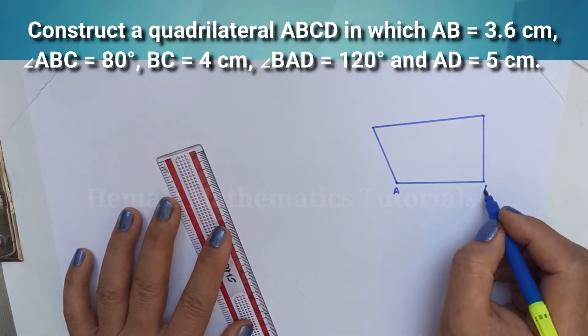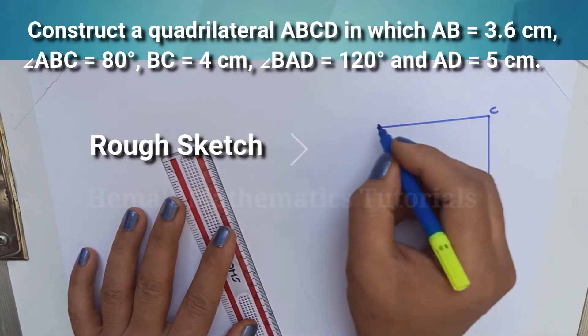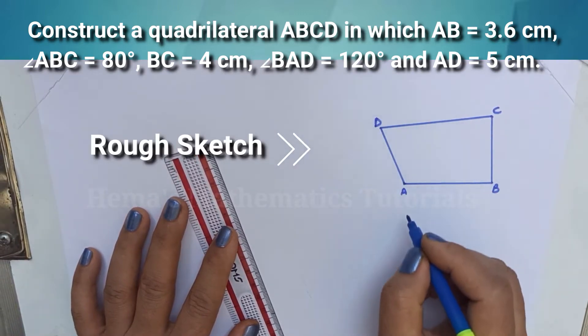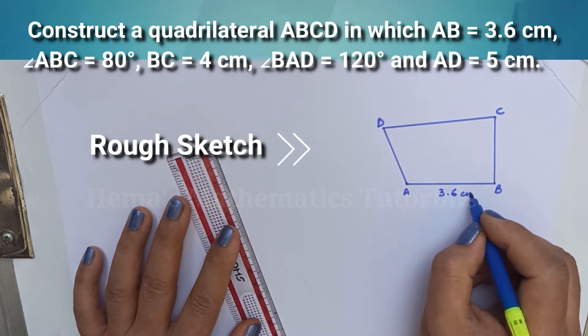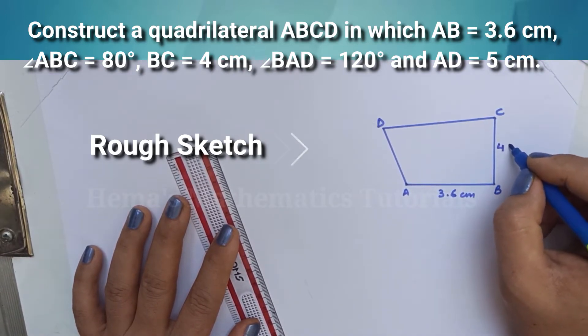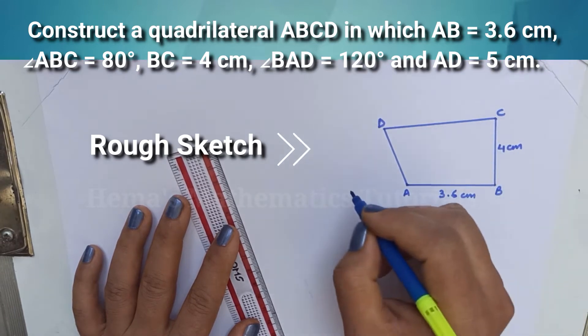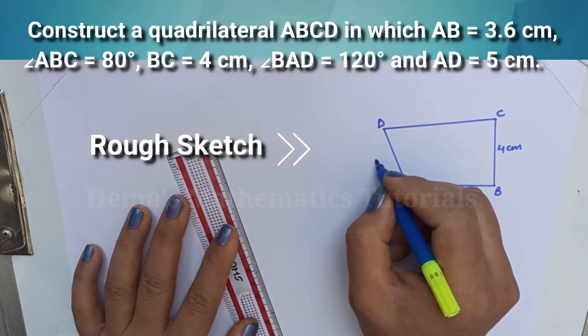To construct a quadrilateral ABCD in which AB is equal to 3.6 cm, BC is equal to 4 cm, and AD is equal to 5 cm.